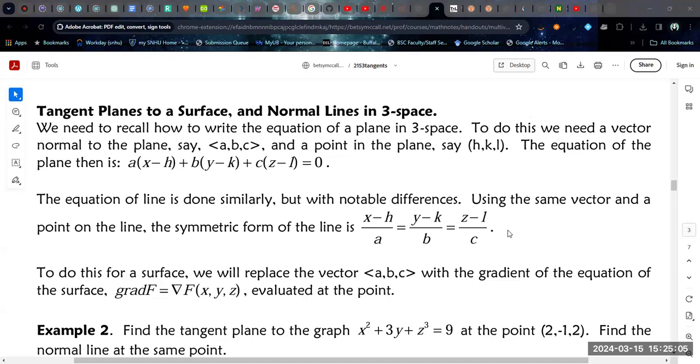That version would be R of T, and then you would solve each of these for T, sorry, for X, for Y, and Z, each of them equal to T in order to get those components. So you would get essentially A times T plus H for the X component and B times T plus K for the Y component and C times T plus L for the K component.